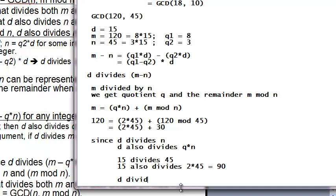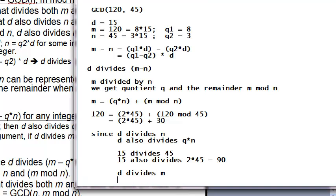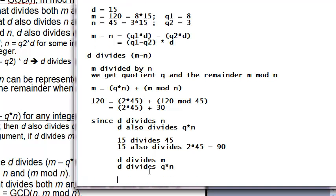So what we have, d divides m from the initial thing, and also d divides q times n. So from what we discussed before, if d divides m and d divides q times n, I can say d divides m minus q times n.